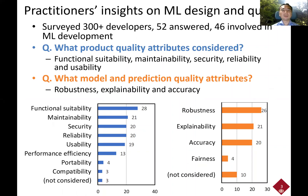We asked several questions, such as: what product quality attributes do you consider when designing machine learning software systems? The respondents mostly indicated functional suitability, maintainability, security, reliability, and usability. Regarding model and prediction quality attributes, they mostly concerned robustness, explainability, and accuracy of predictions and machine learning models.